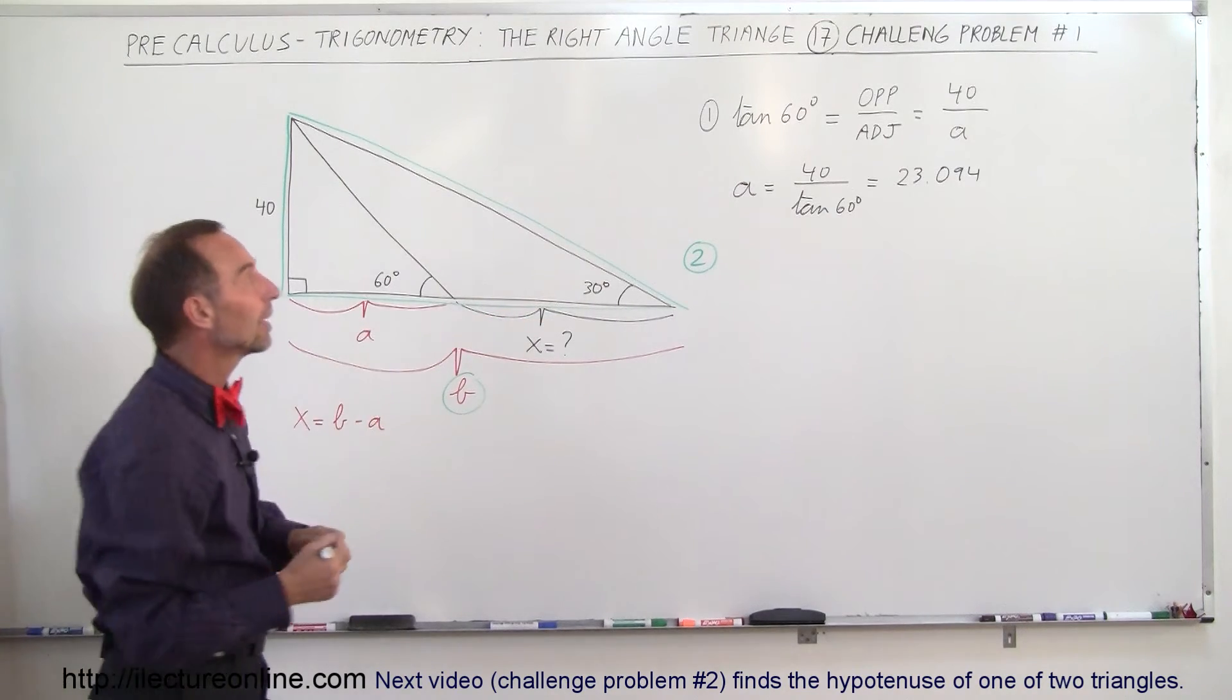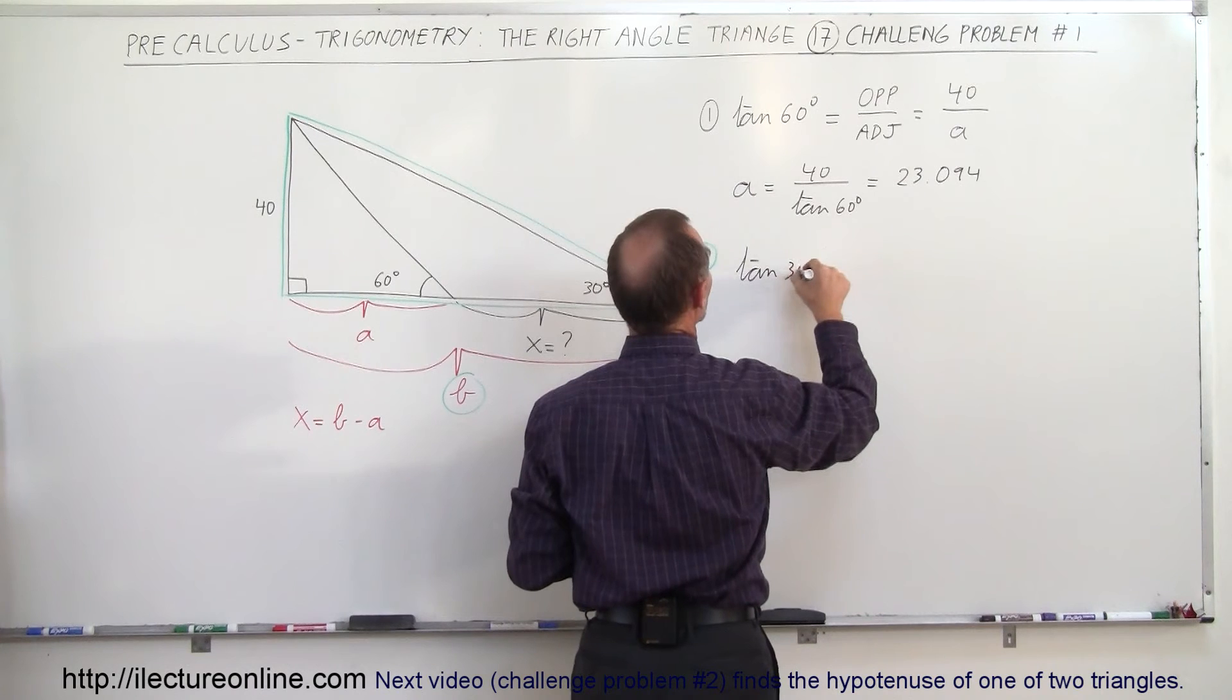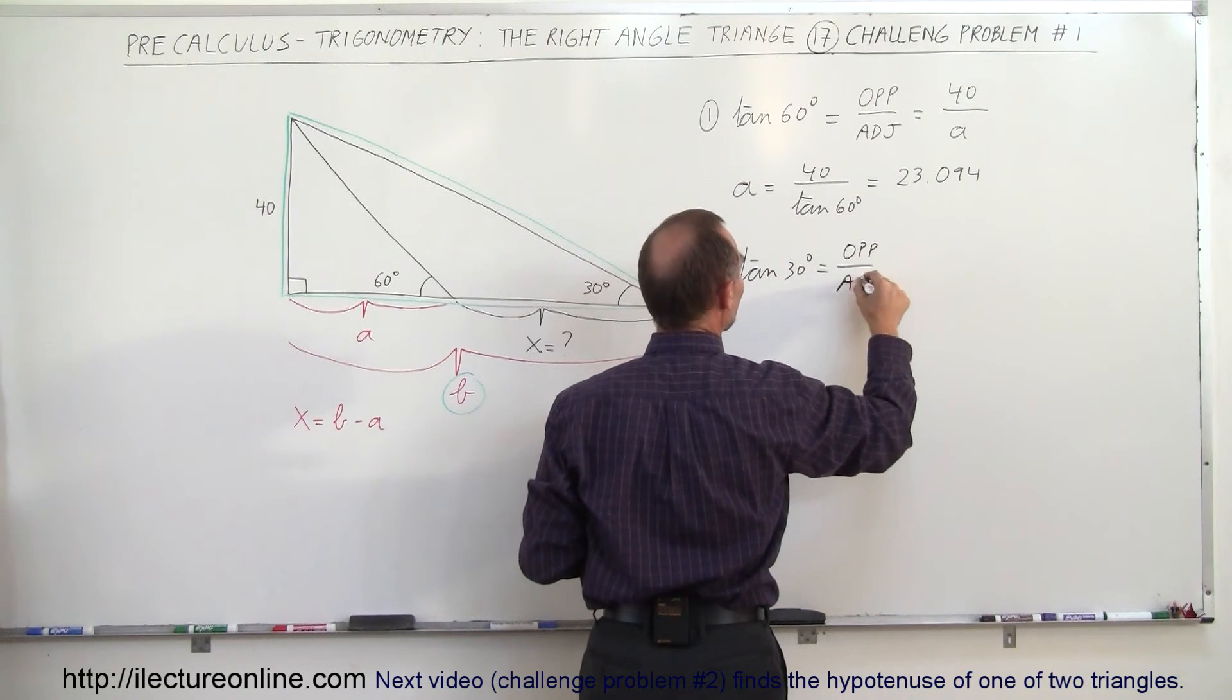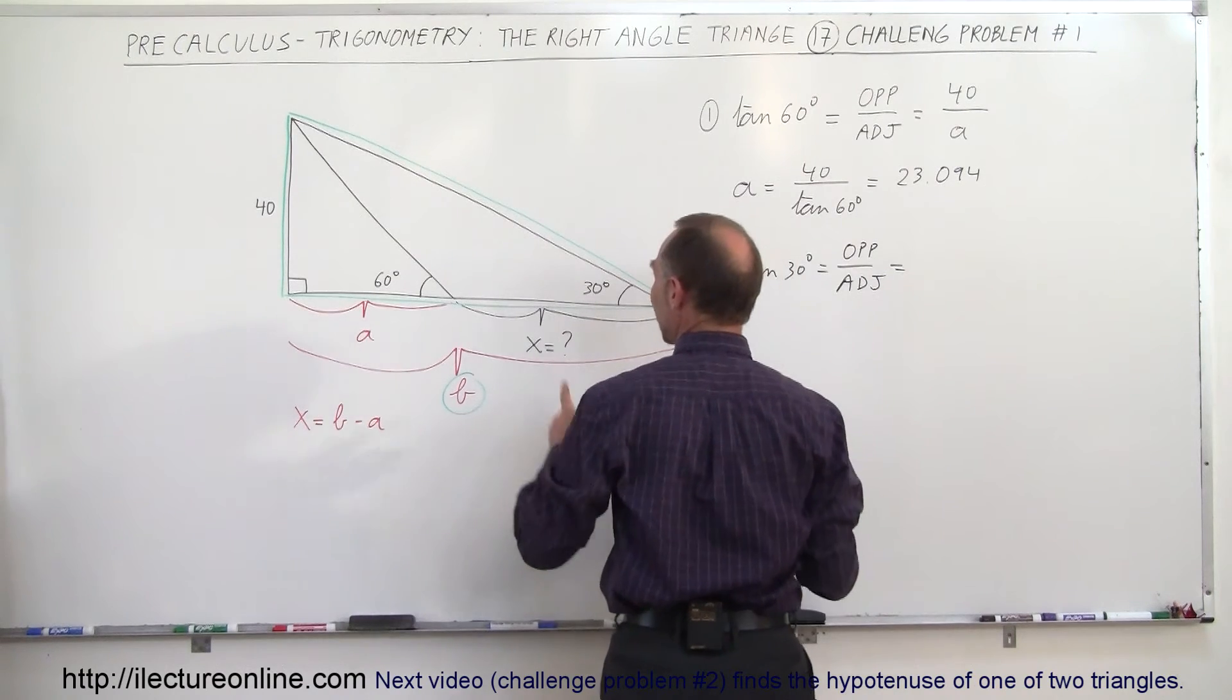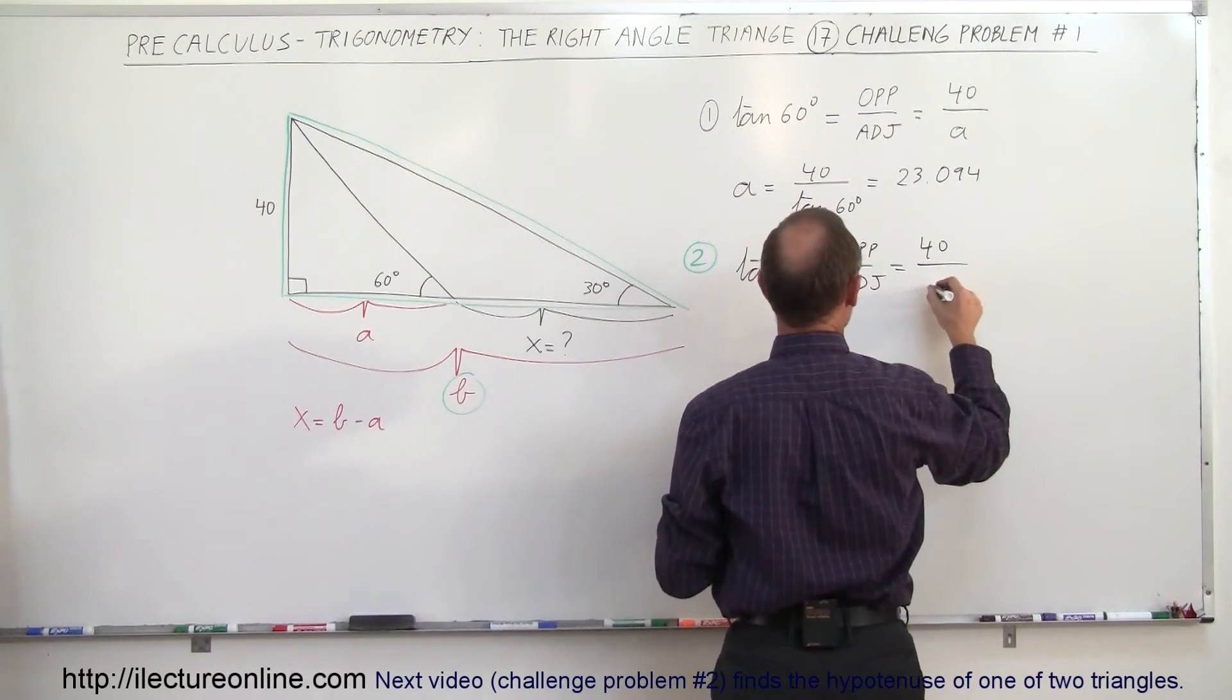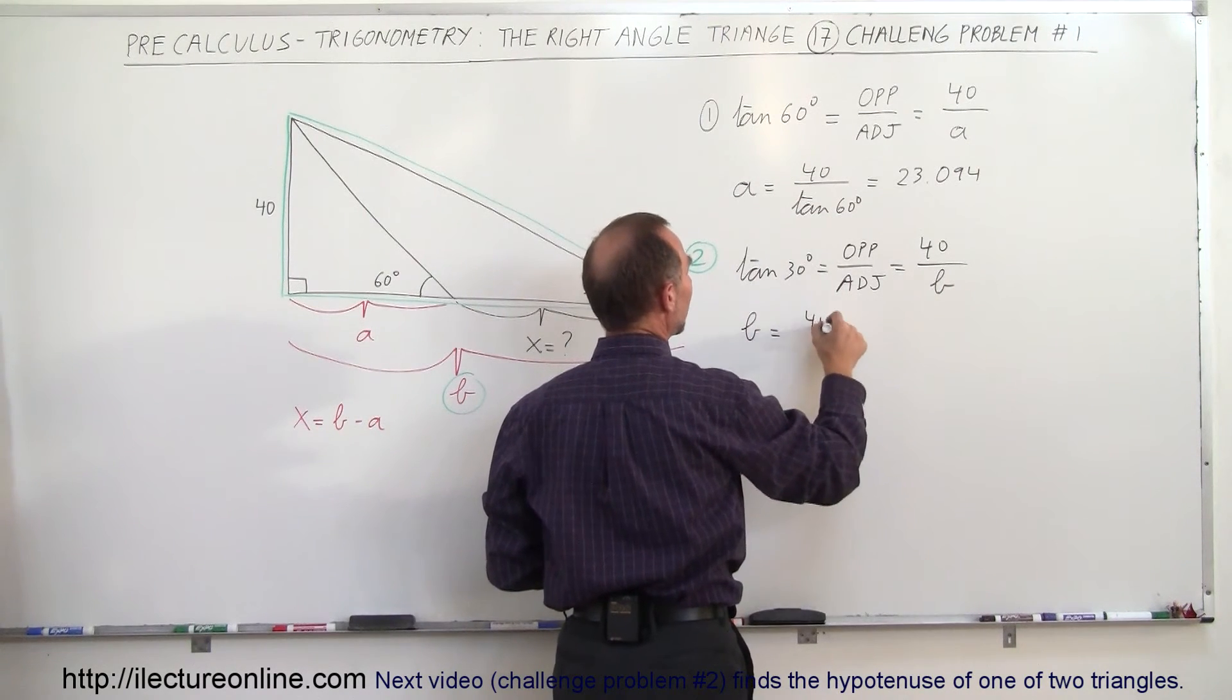So in this case we say that the tangent of 30 degrees is by definition equal to the ratio of the opposite side divided by the adjacent side. And the opposite side is in this case 40 as well, and the adjacent side in this case is B, which means that B is equal to 40 divided by the tangent of 30 degrees.